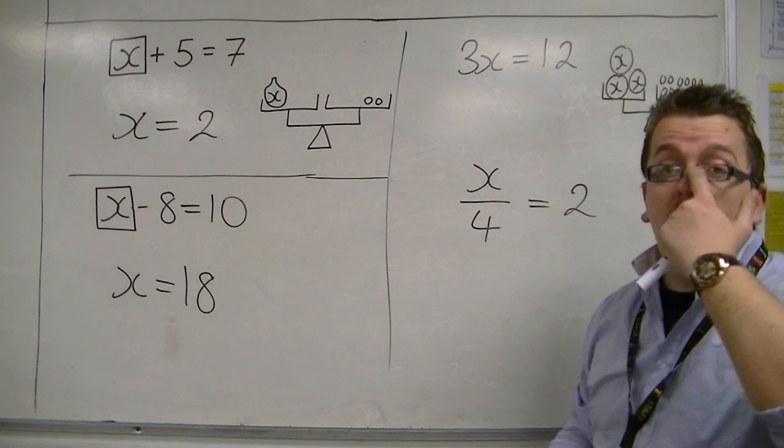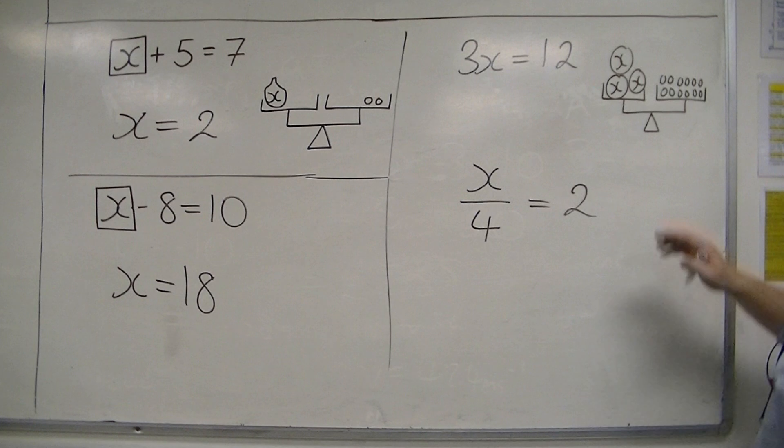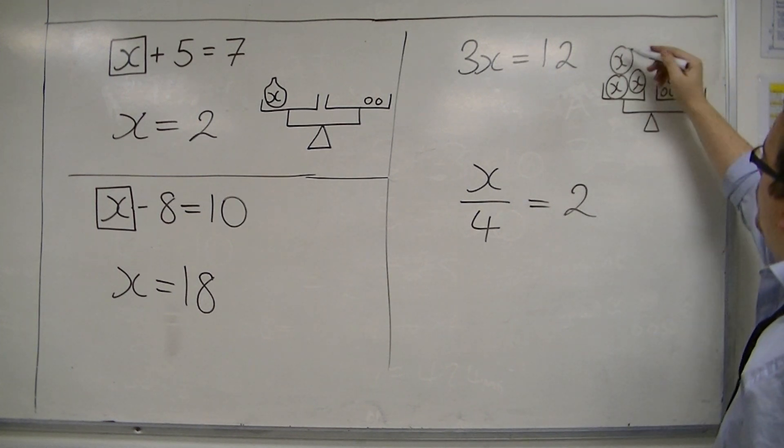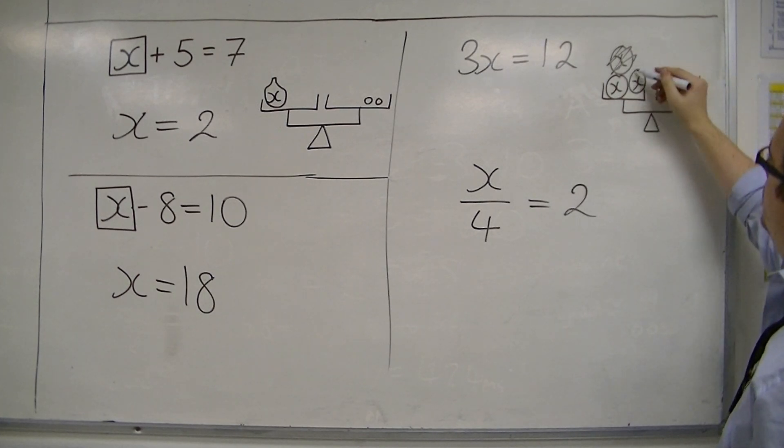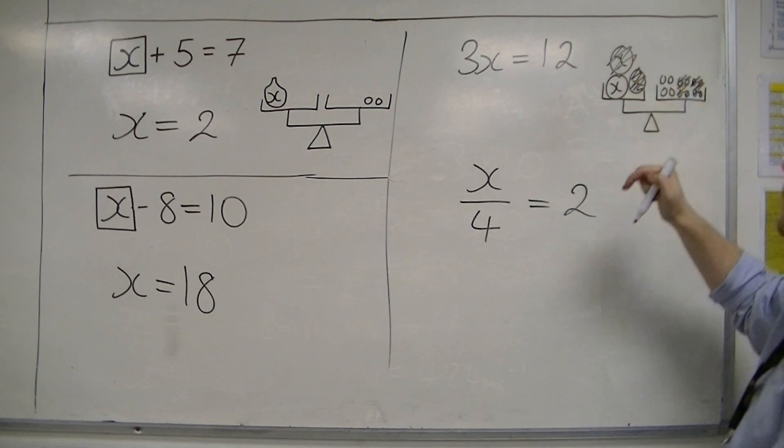Now, if you needed to work out what x was, then you could divide both sides by three, because that will eliminate one of those x's. So, one of those four, and one of those x's, and one of those four, leaving you with just x is equal to four.